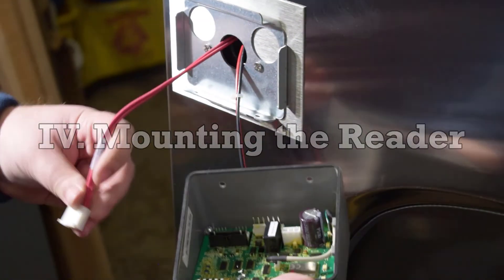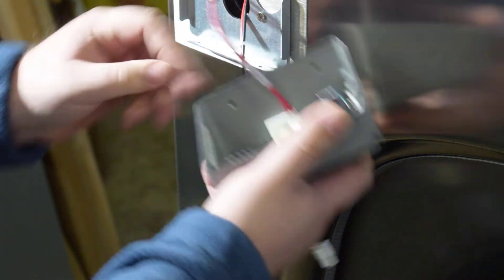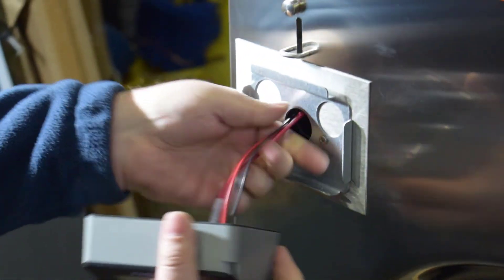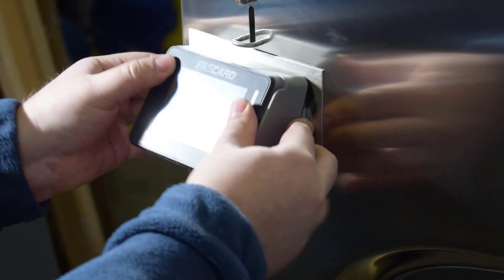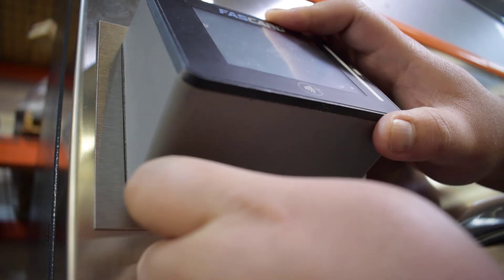Once the bracket is in place and harnesses are fed through the center hole, connecting the power, machine start, and if a coin and card setup, coin sense harnesses would be your last step before mounting the reader. Once connected, align the top groove to seat the reader and tighten the two reader mounting screws and you will have successfully installed the reader.